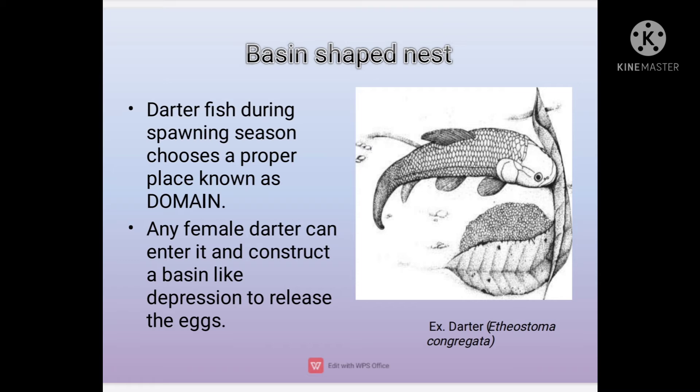The next is the basin-shaped nest. The darter fish during the spawning season chooses a proper place known as a domain. Any female darter can enter it and construct a basin-like structure in it to release her eggs.